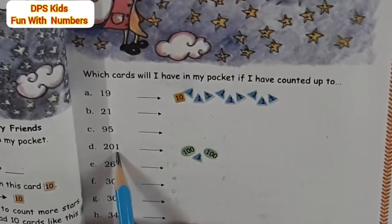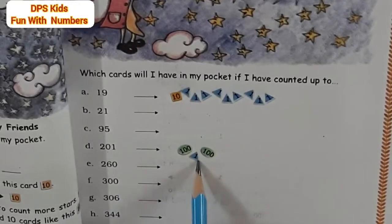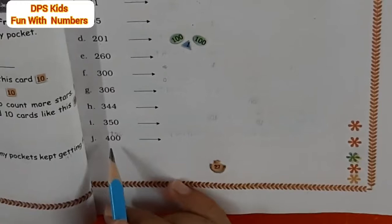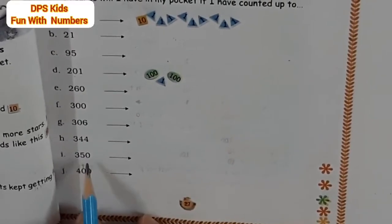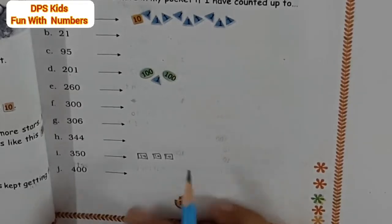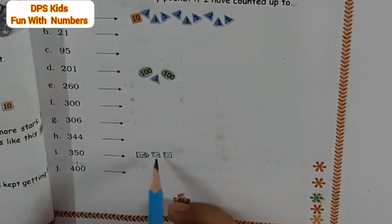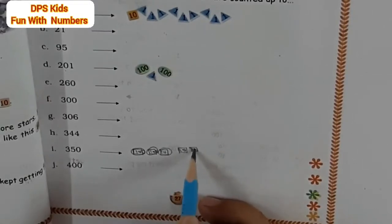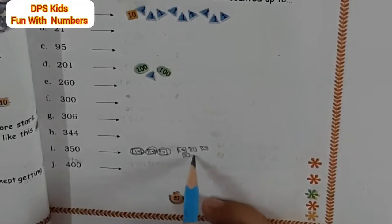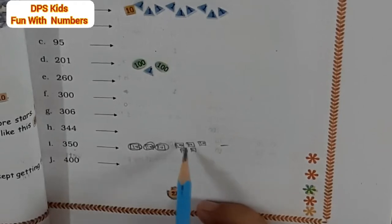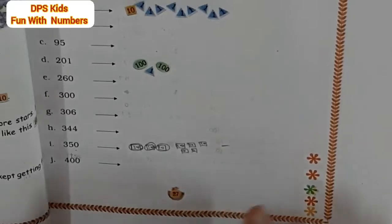For all these numbers I make cards like this — for 260, 300, 306. For 350: three hundred and fifty, so I make three circular cards of hundred and five orange cards of tens and zero triangle cards. That is three hundred and ten, twenty, thirty, forty, fifty — three hundred and fifty.